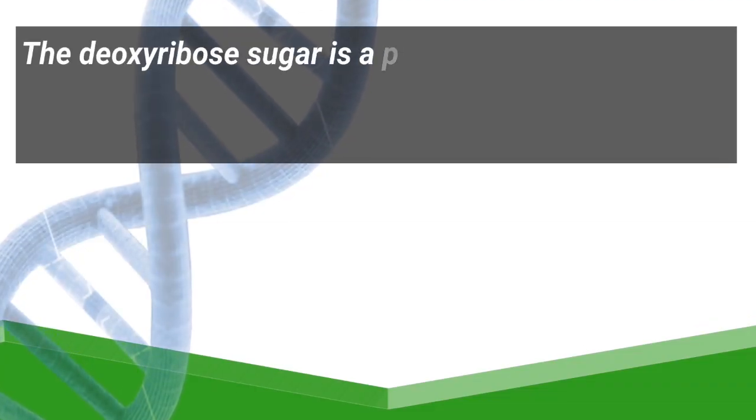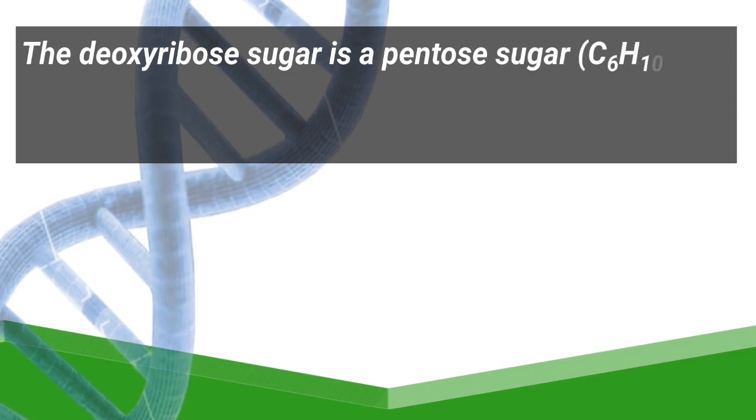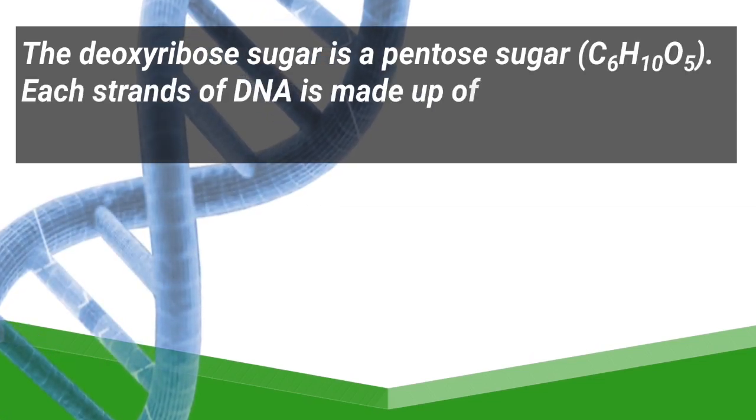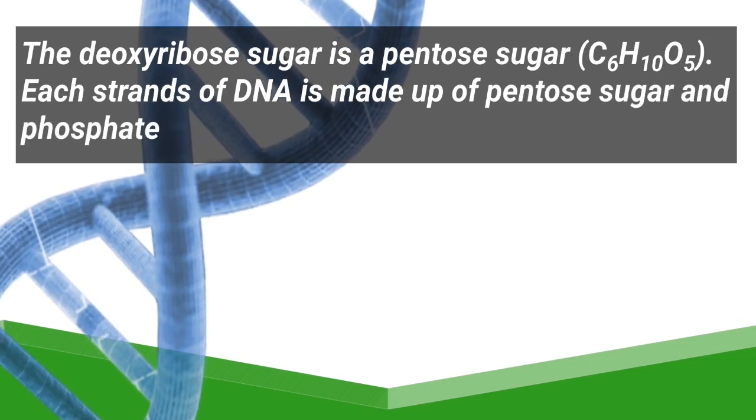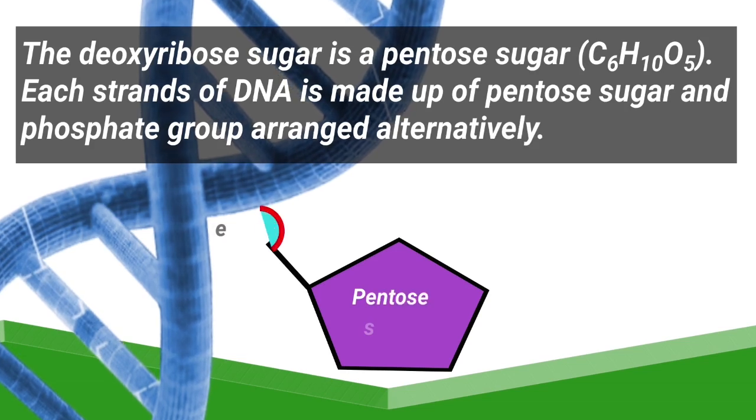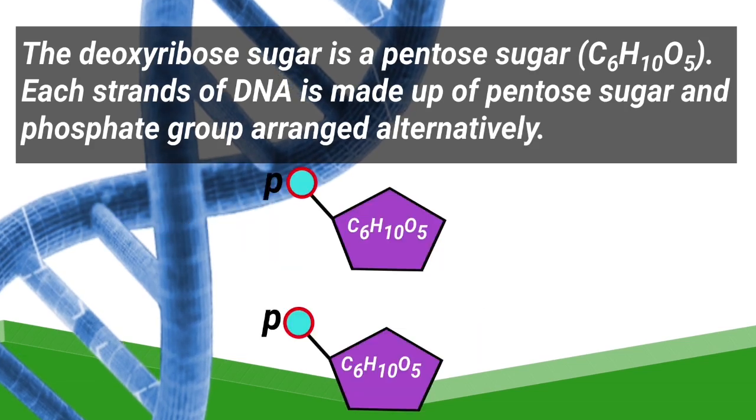The deoxyribose sugar is also known as pentose sugar. Each strand of DNA is made up of pentose sugar and phosphate groups which are arranged in an alternating manner. Here you can observe both pentose sugar and phosphate groups attached together in an alternating pattern.